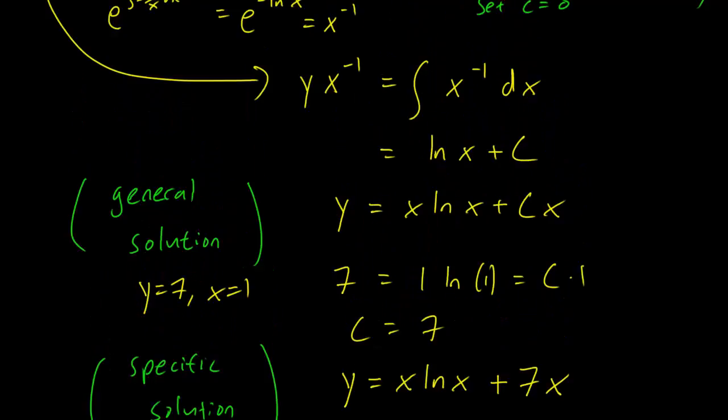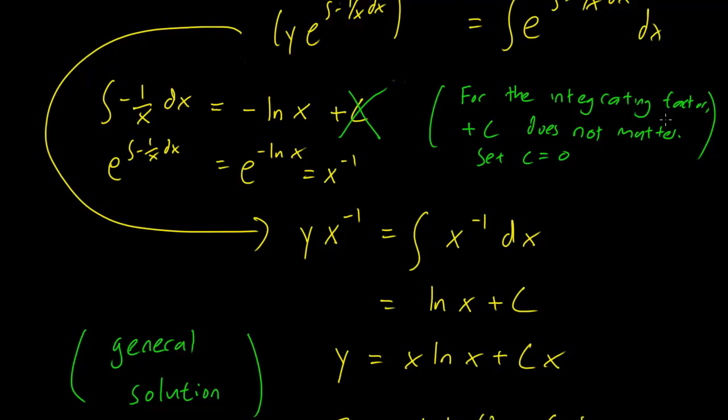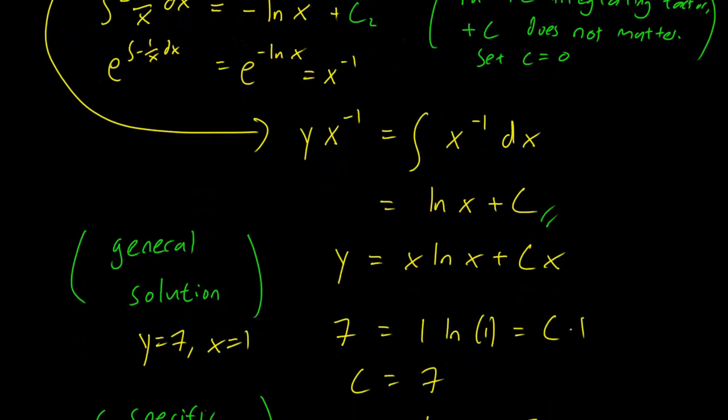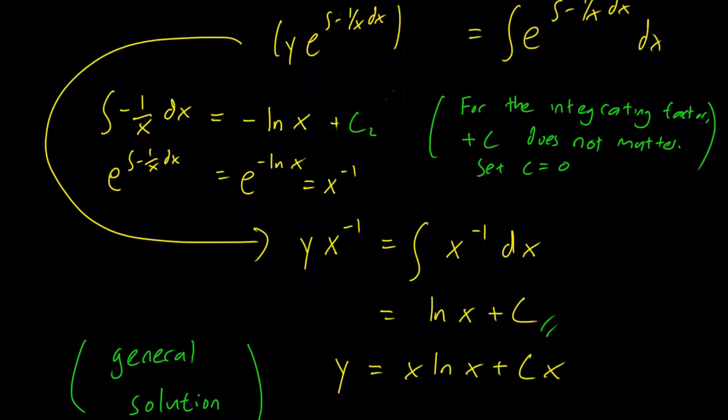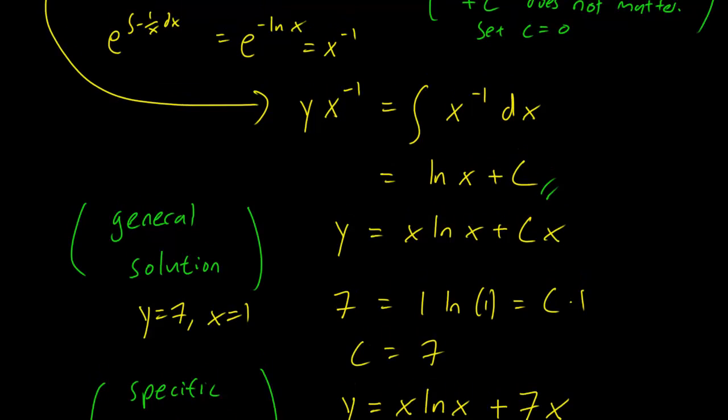All right, so here's a challenge for you guys. Remember back here when I said that plus c does not matter? Why not try redoing the problem but leaving the plus c here in? Now to avoid confusion with the c that comes later on here, why not call this c2? Try redoing the problem with the c2 term here. You don't have to solve for it, but see what happens to it when you go through this calculation until you get the general solution and you'll see why I said that the plus c did not matter. We will discuss this in class of course, but I hope this example was instructive.